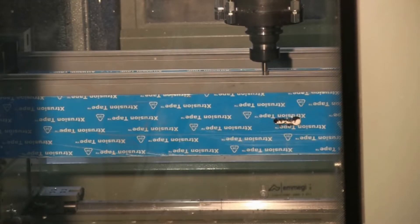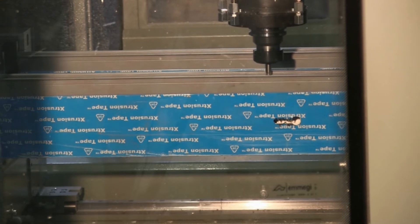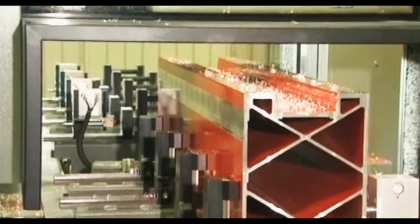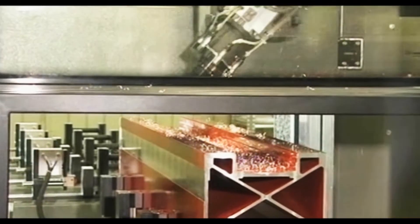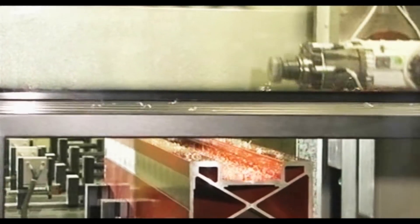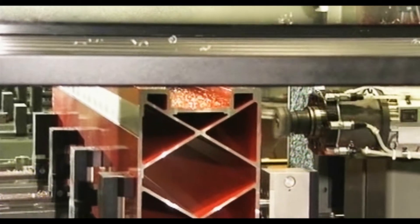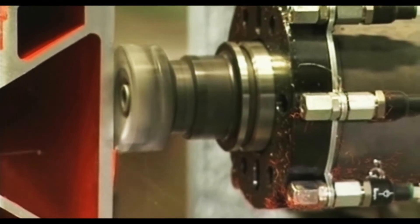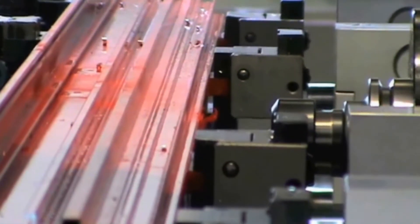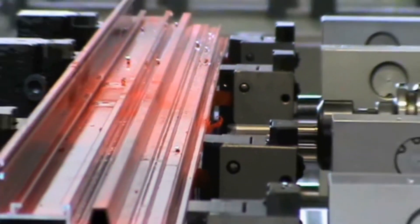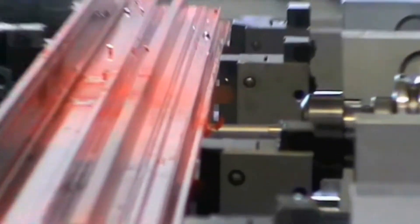The high powered 7.5 kilowatt electro spindle rotates around the longitudinal x-axis at angles ranging from plus 90 degrees to minus 90 degrees for machining on three sides of the profile. The electro spindle allows even heavy duty processing with excellent results in terms of speed and accuracy.